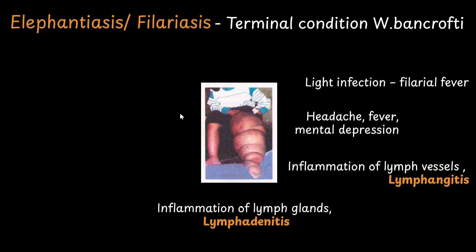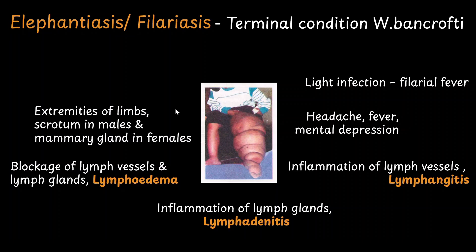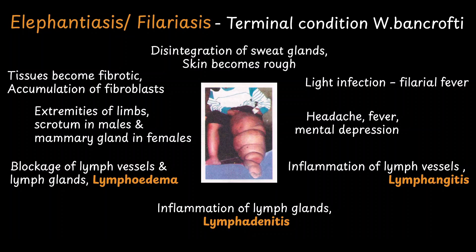Finally, it can also physically cause blockage of lymph vessels and lymph glands. This leads to retention of the lymph fluid, causing swelling called lymphedema. The swellings are usually noticed in the extremities of the limbs, and in males sometimes in the scrotum, and in females in the mammary glands. The tissue becomes fibrotic as fibroblast cells accumulate, and it even leads to disintegration of sweat glands, making the skin very rough. At this stage, it is a full-blown Elephantiasis infection.